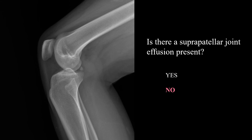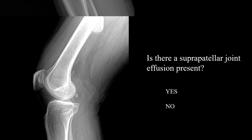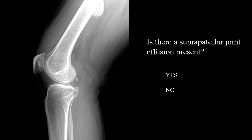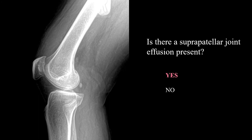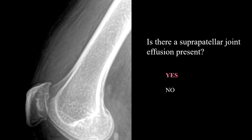No, there is not — this is a normal knee. Is there a suprapatellar joint effusion present? Yes, there is. You'll notice a very large homogeneous density in the suprapatellar region, and this is indicative of an effusion.